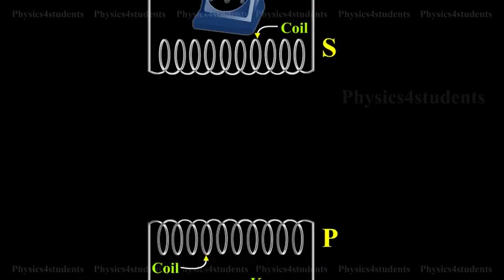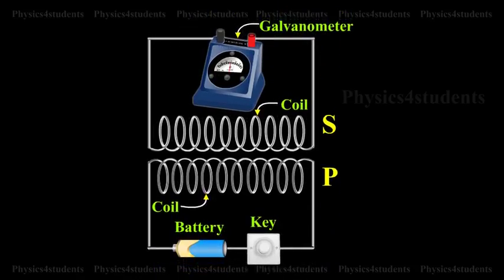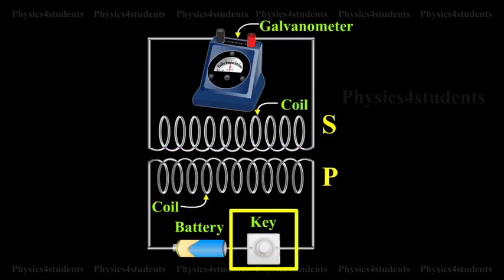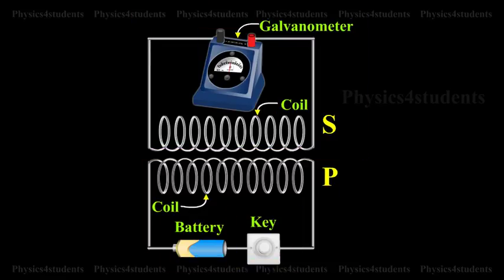P and S are two coils placed close to each other. P is connected to a battery through a key K. S is connected to a galvanometer G.